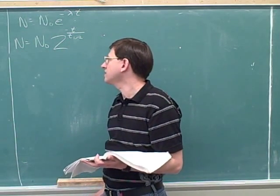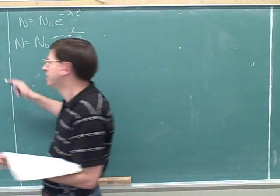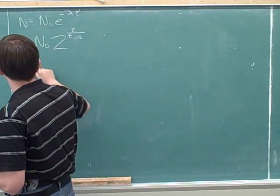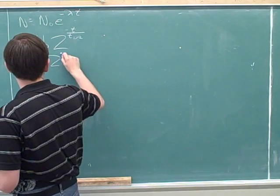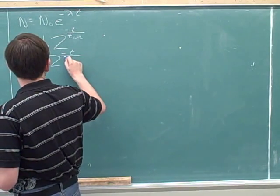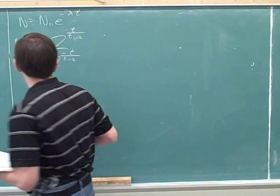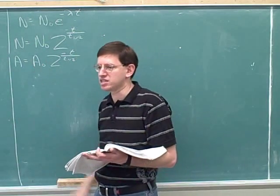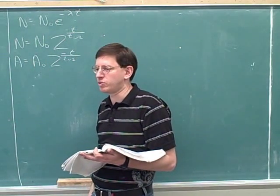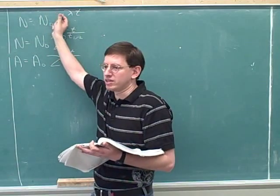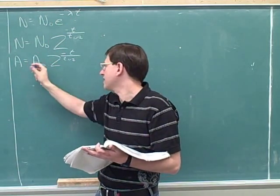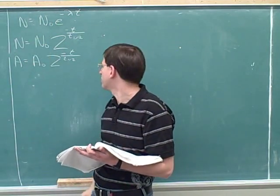Now, we know that the radioactivity is proportional to the number of nuclei. So we have the same exact equation for a as for n. We already saw that we had the same equation for a and n when we were working with lambda. So we have the same deal here. We can have the same equation for a or for n because they're proportional to each other.